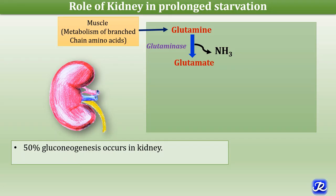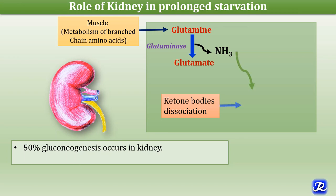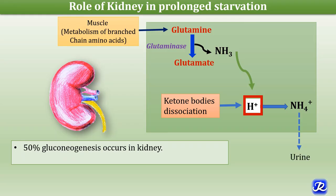In starvation, increased ketone body synthesis causes ketosis — increased ketone body levels in the blood along with ketonuria. Ketone body dissociation leads to acidosis due to increased hydrogen ion concentration. Ammonia combines with these hydrogen ions to form ammonium ions, which are excreted through urine, thereby providing compensation for the acidosis of starvation.